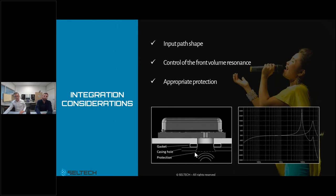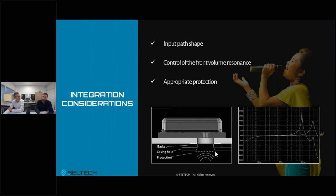Because the acoustic path acts as an extension to the MEMS front volume, it will inherently modify the high-frequency resonance. You need to carefully design the path to keep this resonance outside your application's bandwidth of interest. Since MEMS microphones can be very sensitive, you need to apply appropriate protection, but be aware that overly thick protection can modify the acoustic performance of your microphone system.